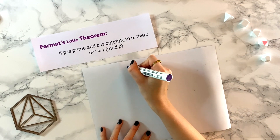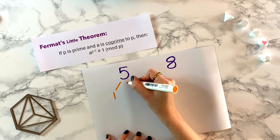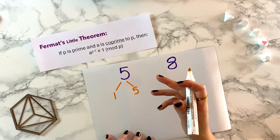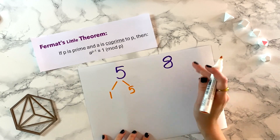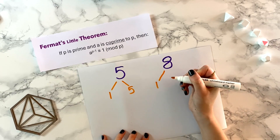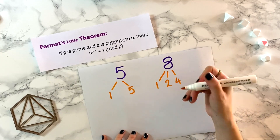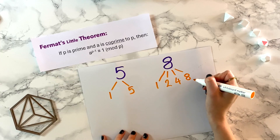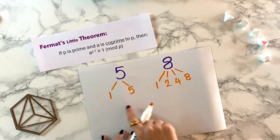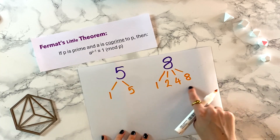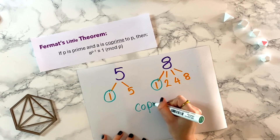Let's say I consider the numbers five and eight. The factors of five are one and five — two, three, and four don't go into five. In fact five is a prime number, so we know it's just one and five. The factors of eight: we have one, two, four, and eight. So the only factor five and eight have in common is one, which means these numbers are co-prime.